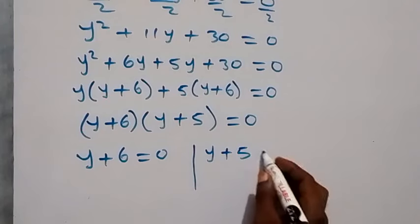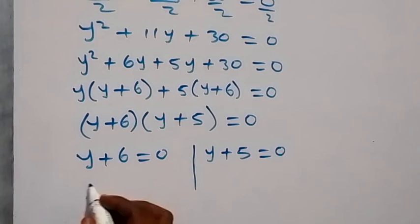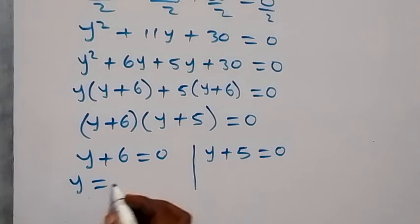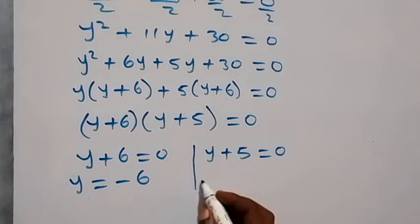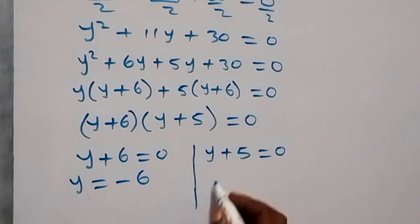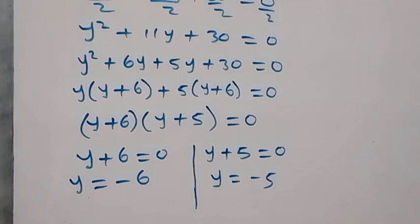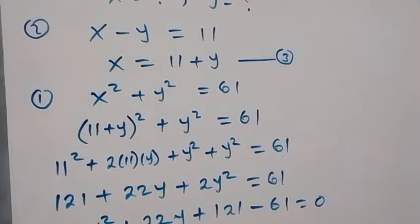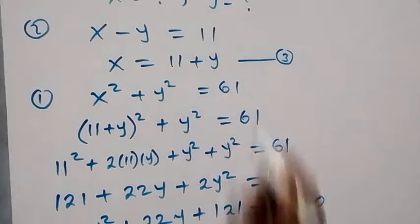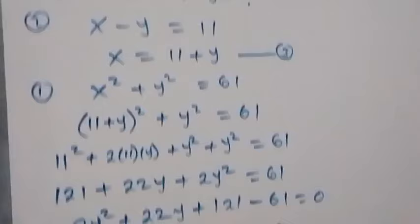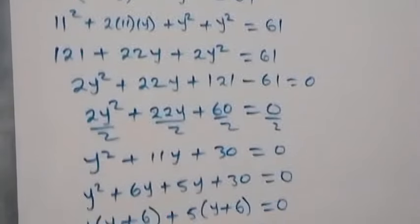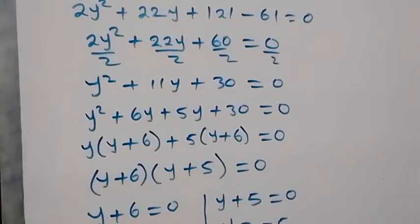From the two cases: y plus 6 equals zero gives y equals minus 6, and y plus 5 equals zero gives y equals minus 5. To get the corresponding values of x, we use equation three: x equals 11 plus y.